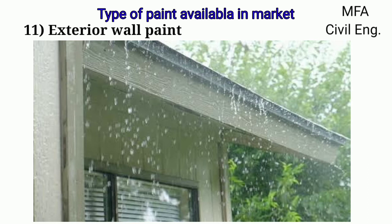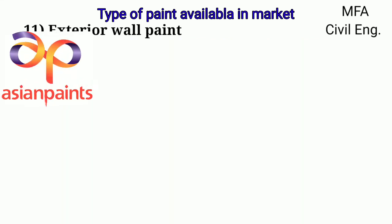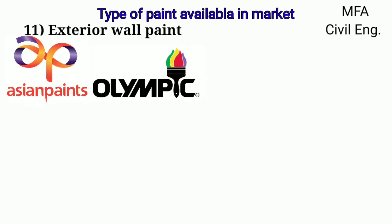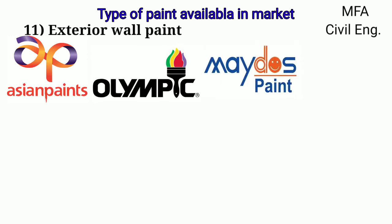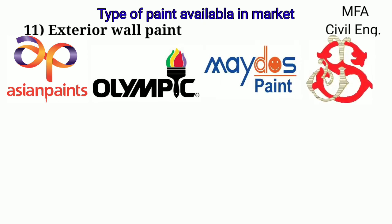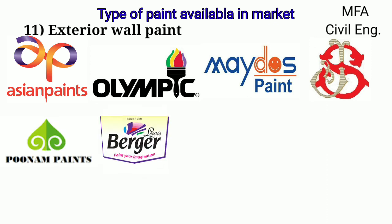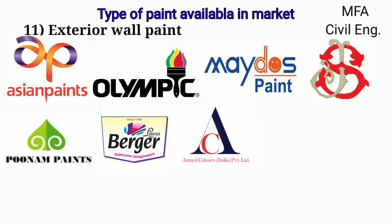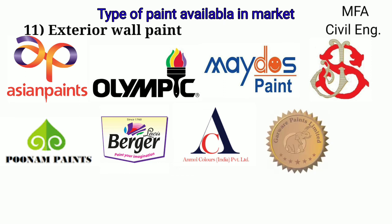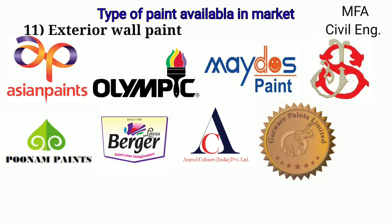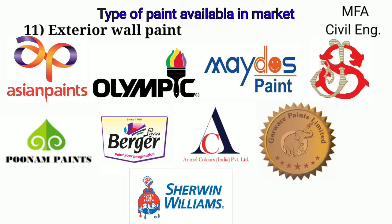There are many exterior paints available in the market with various trade names, like Asian Paint, Olympic Premium, Meadows Paint, Dekosium Paint Private Limited, Poonam Paint, Burger Paint India Limited, Anmol Color Private Limited, Garware Paint Limited, and Sherwin Williams Paint India Private Limited.